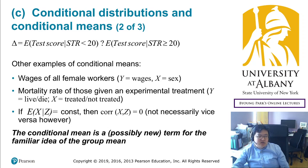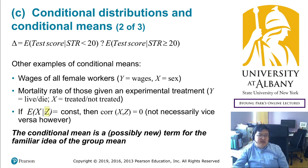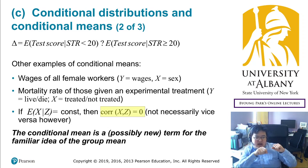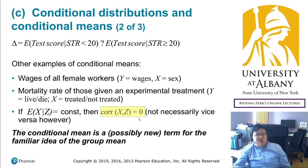If the conditional mean does not change as z changes — even as the condition changes, the conditional mean may not change — that means x is not affected by z, or their correlation equals zero. So if z increases but the expected value of x remains constant, they are not correlated, and the correlation coefficient should be zero.